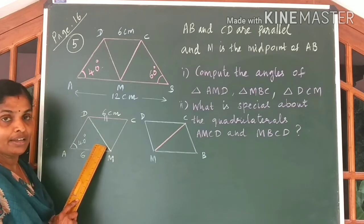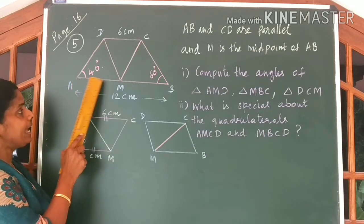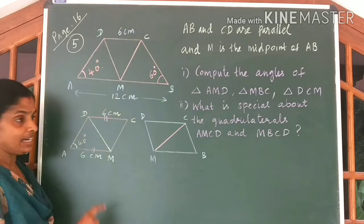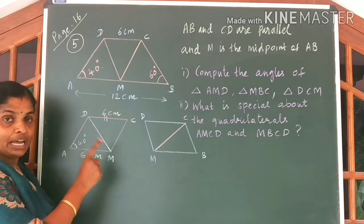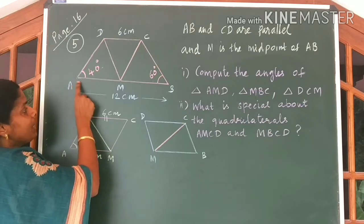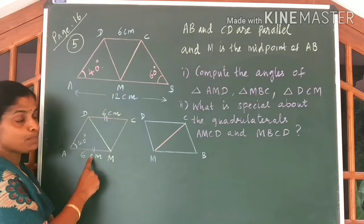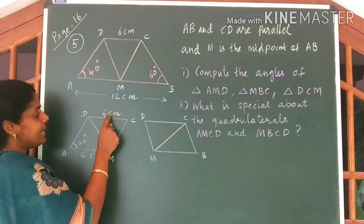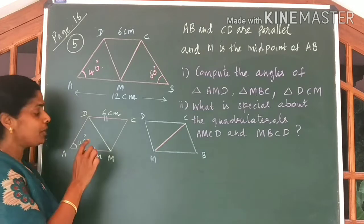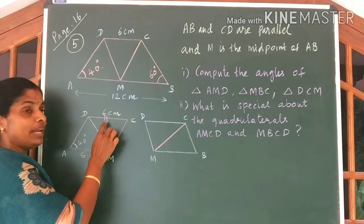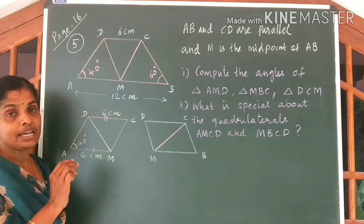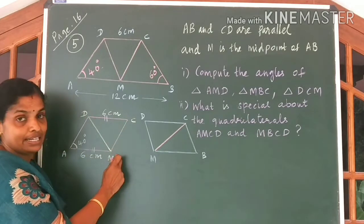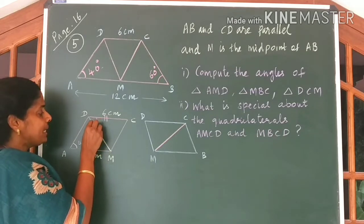Now come to the first figure, that is AMCD. AMCD is a quadrilateral. Look at the measures. We know AM is equal to 6, because M is the midpoint. DC is already given to be equal to 6. Also, these two lines are parallel lines. Now, if parallel lines are cut by a transversal, the angles formed here —